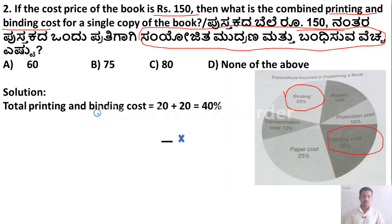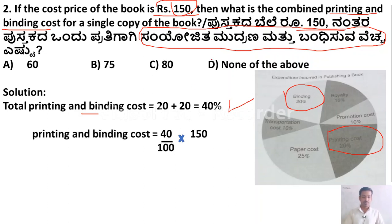Total printing and binding cost = 20 + 20 = 40%. The cost price is Rs. 150. So: 40/100 × 150 = 4 × 15 = 60. The answer is Rs. 60. Option A is correct.